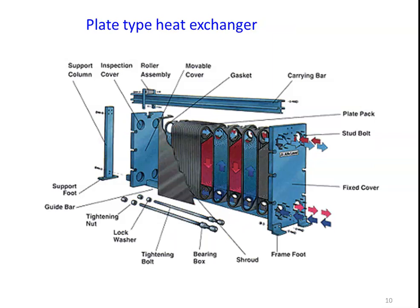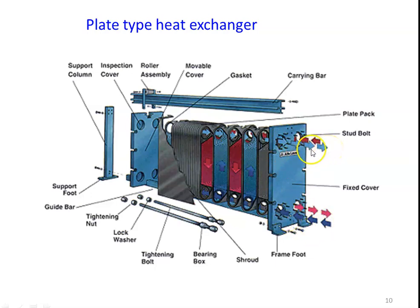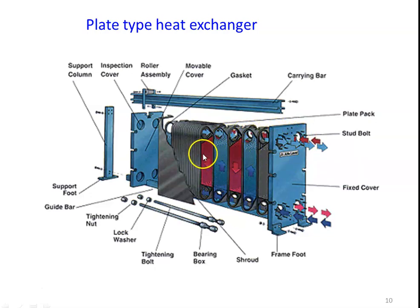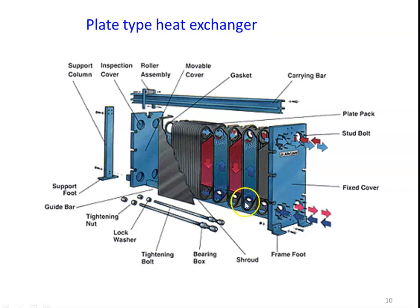This is a plate type heat exchanger where we have vertical plates. The red color line indicates the hot fluid and the dark blue color line indicates the cold fluid. Hot fluid enters through its opening and the fluids flow in alternative gaps between the plates. We have a first plate, second plate, third plate, fourth plate, fifth plate, and so on — a number of vertical plates. The hot and cold fluid flow in adjacent, alternating gaps between the plates, and heat is transferred between them.